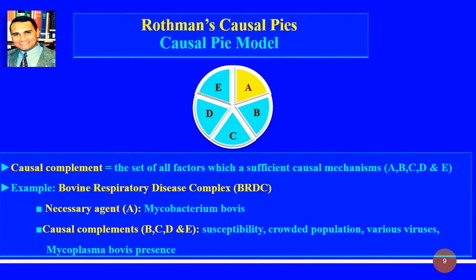Another example is the occurrence of Bovine Respiratory Disease Complex. One causal pie includes external stressors such as cold weather, infection with viruses such as bovine influenza 3, and presence of bacteria Mannheimia. The presence of all three are the components, and the necessary component for occurrence is Mannheimia.